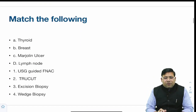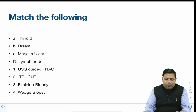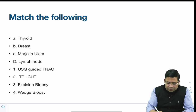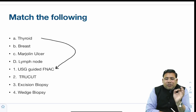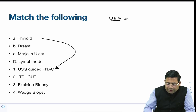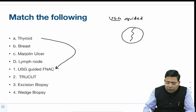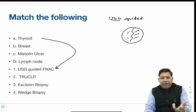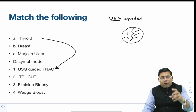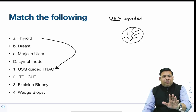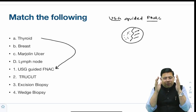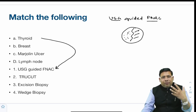There was a match-the-following question on how to approach lesions for diagnosis. For thyroid, USD-guided FNAC is the gold standard. It is USD-guided because majority of thyroid nodules are a mixture of solid and cystic components — solid is the tumor part, cystic is the degenerate part. A blind FNA increases the risk of false negative reporting, which could miss malignancy. We don't go for true-cut biopsy because the thyroid is a vascular organ.